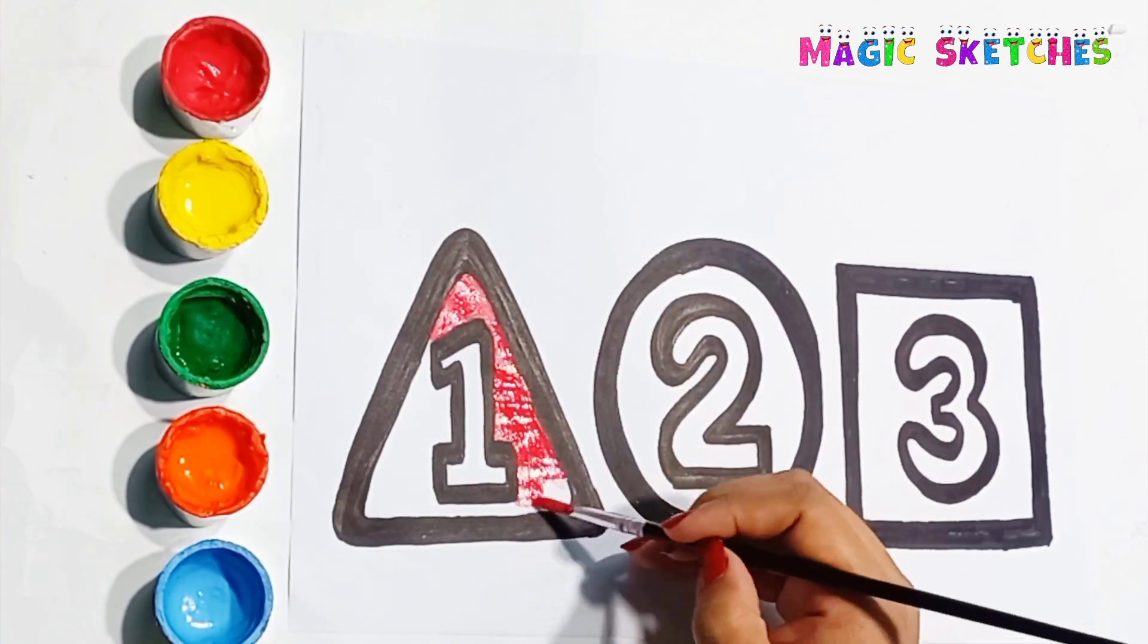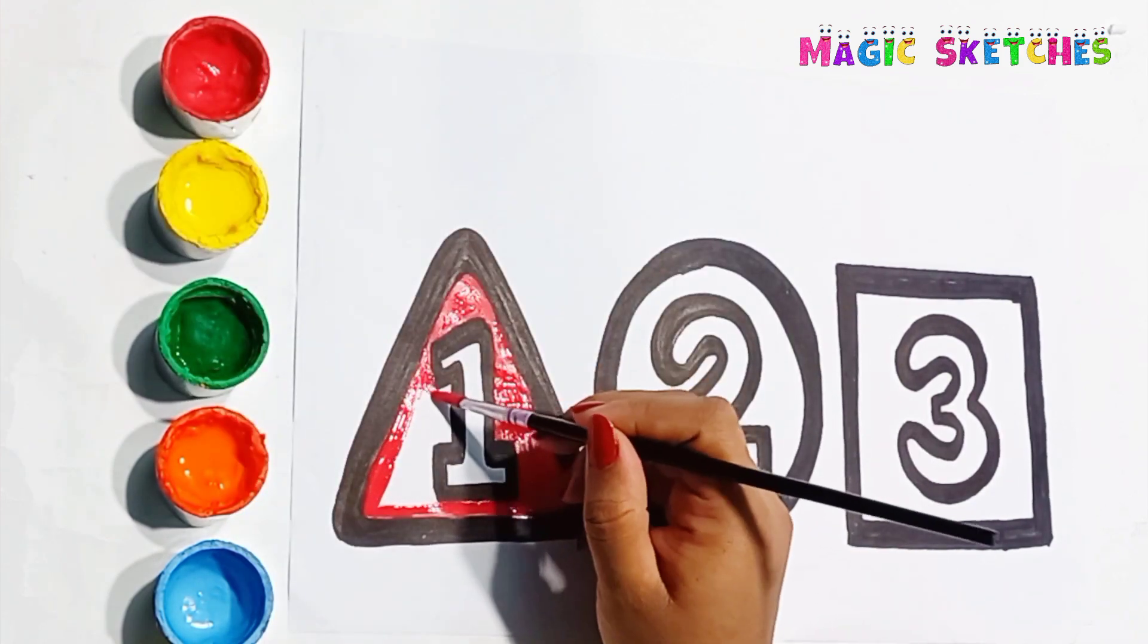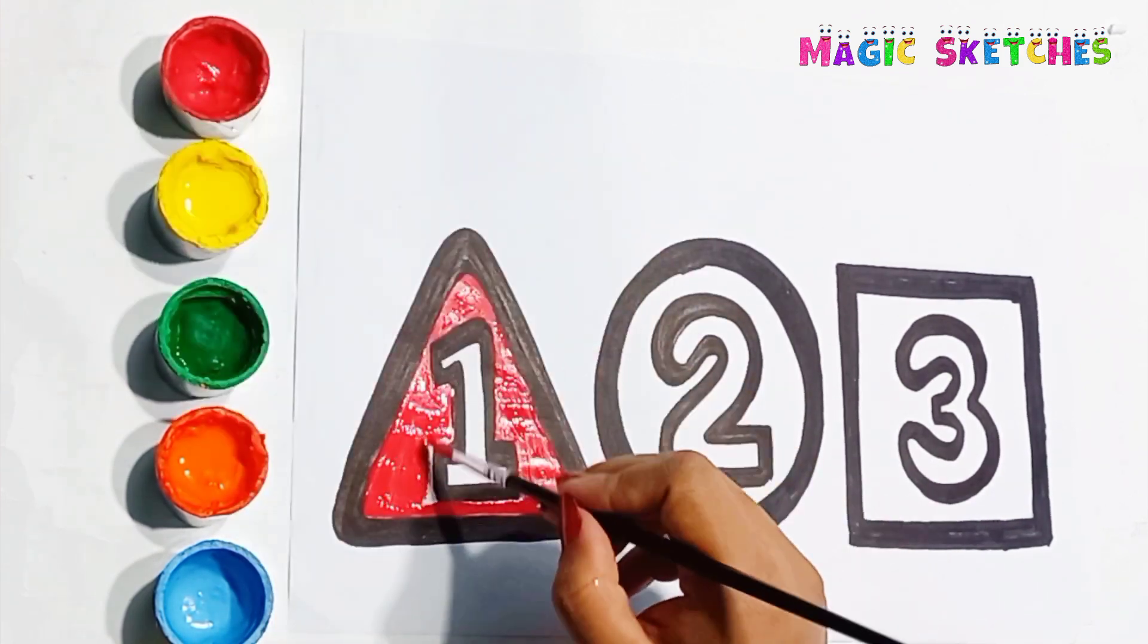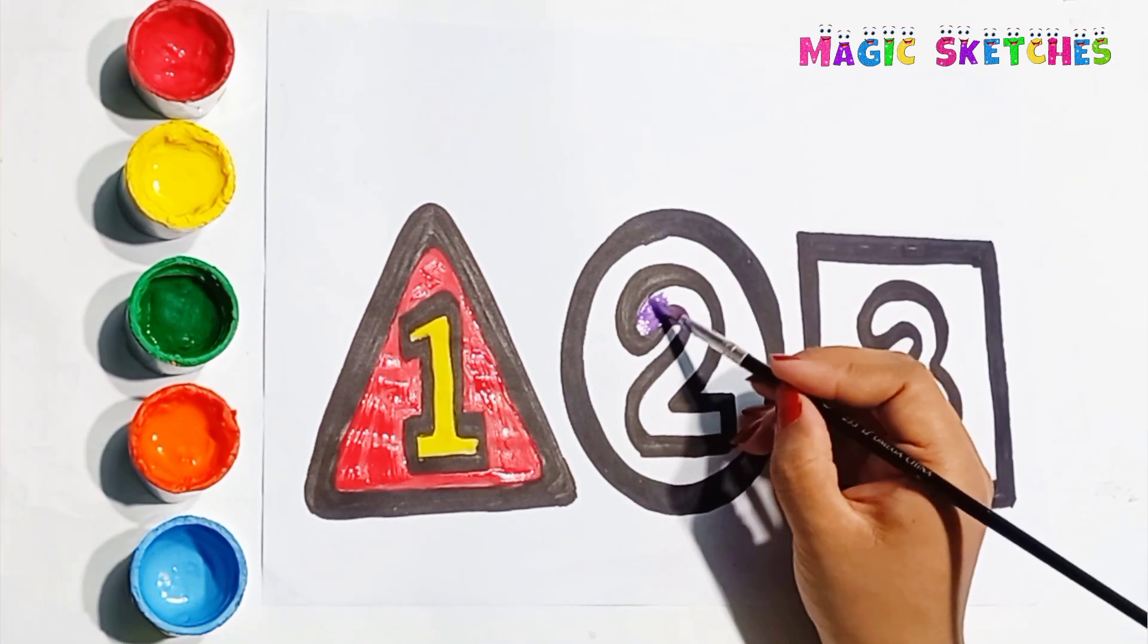Do you know other geometrical shapes? It's a yellow number 1 in red triangle.